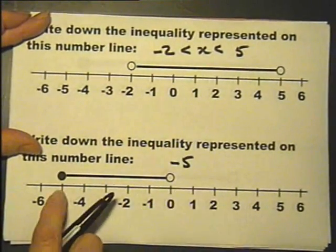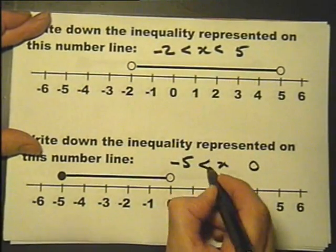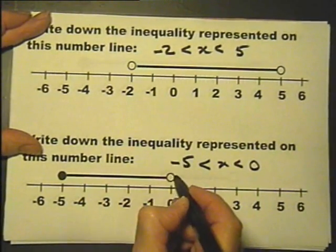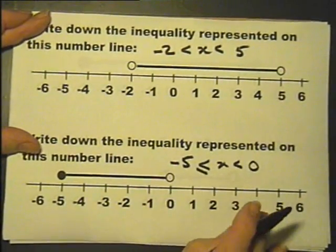This one goes from minus 5 to 0, so x is between minus 5 and 0. It includes the minus 5, that's that done.